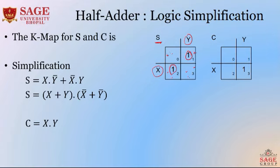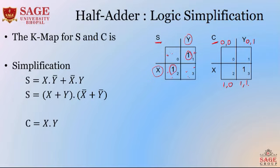This is the k-map for the function c, carry. c is generated if and only if x and y are both 1. In block 0, x and y are both 0 — no carry. In block 1, x is 0 and y is 1 — no carry. In block 2, x is 1 and y is 0 — no carry. But when x and y are both 1, we get carry 1.